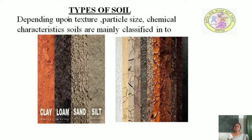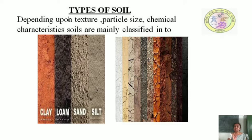Loam is a rich, friable soil containing a relatively equal mixture of sand, silt, and clay in smaller proportions. It is a mixture of all three contents — sand, silt, and clay — and is considered the best soil type for construction.